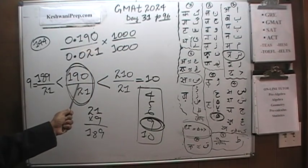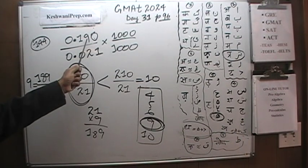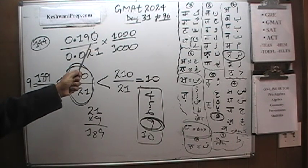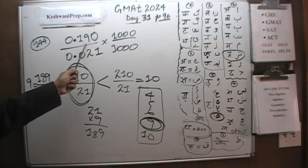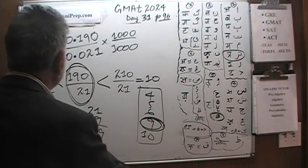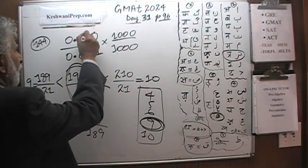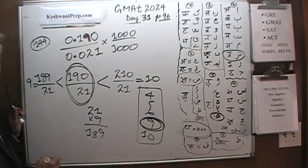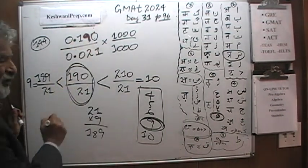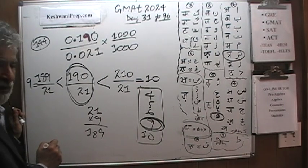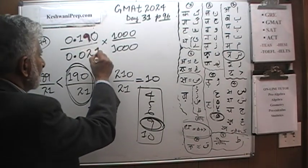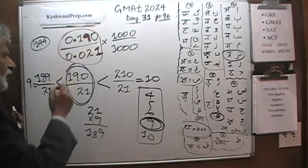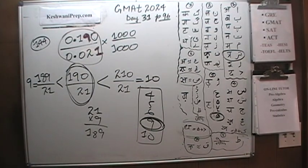This quantity is closer to 9. We made sure it is the greatest possible by putting X equals 9 in the numerator and Y equals 1 in the denominator — maximizing the numerator and minimizing the denominator. The closest to the greatest possible value is 9. The answer is 9.